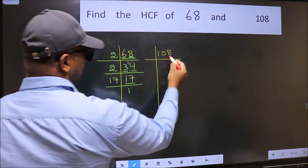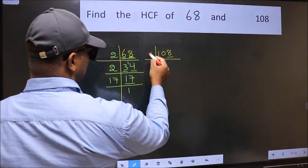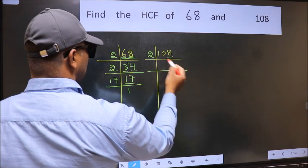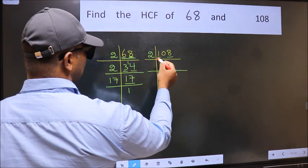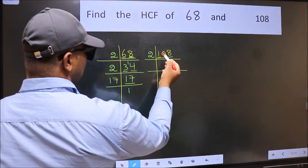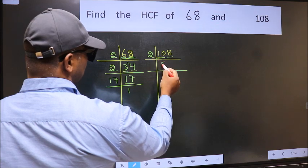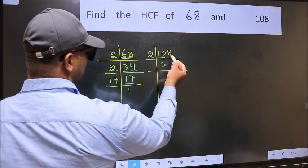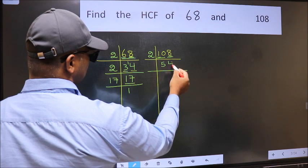The other number, last digit 8 is even, so take 2. First number 1 is smaller than 2, so we use 10. When do we get 10 in 2 table? 2 times 5 is 10. The other number 8, when do we get 8 in 2 table? 2 times 4 is 8.